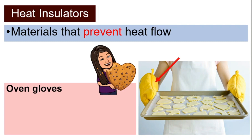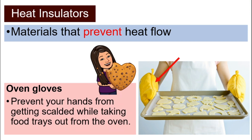For example, oven gloves. Why do we wear oven gloves? So that while we take food trays or cookie trays out of the oven, we put on our oven gloves — it can prevent our hands from getting scalded or hurt from the very hot food trays, because oven gloves are heat insulators which means they prevent heat from flowing from the tray to your hand.